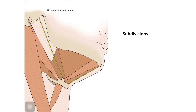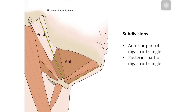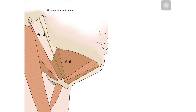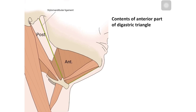The digastric triangle is further subdivided into two parts. The posterior ligament runs from the styloid process, reaches the angle of mandible, and further below divides the digastric triangle into the anterior and the posterior part. We will discuss the contents of each part separately.